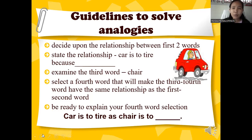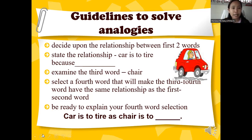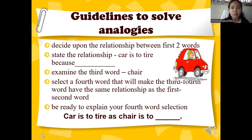How do you solve an analogy? Step one: decide upon the relationship between the first two words. If it doesn't fall under the five types discussed, check your module for more categories. Step two: state the relationship — for example, 'car is to tire because...' Step three: examine the third word to determine if it relates by function, location, or classification. Step four: select a fourth word so the third and fourth words share the same relationship as the first and second. Be ready to explain your selection.